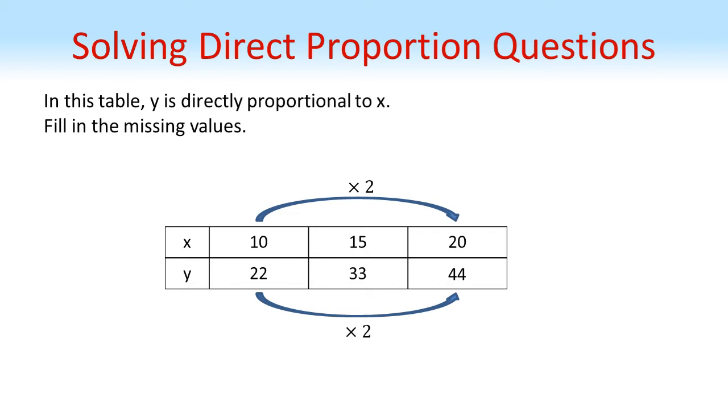And we could have used the middle column if we liked. We could have said, what do we have to do to get from 15 to 20? I picked the first column because the multiplication is a bit easier, but we'd get the same answer either way.